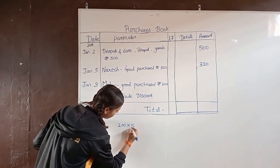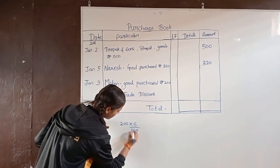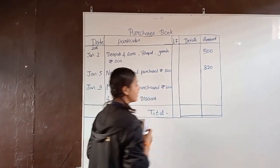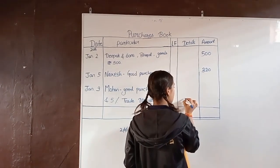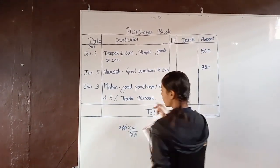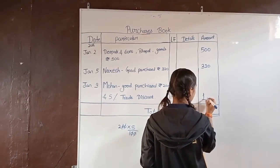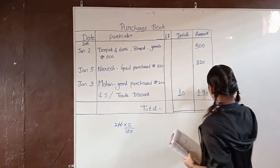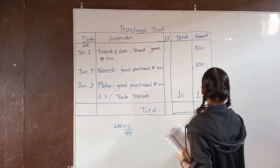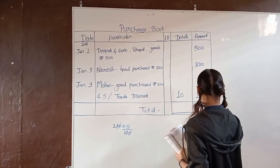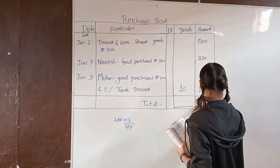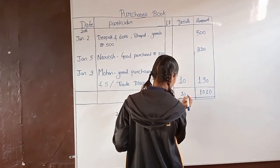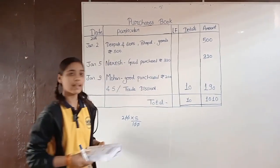Calculating the 5% trade discount on Rs. 200: 5% of 200 equals Rs. 10. So trade discount is Rs. 10, and minus that from 200. Total answer is Rs. 190.